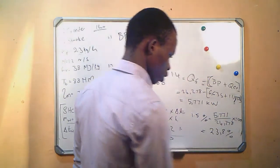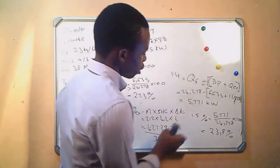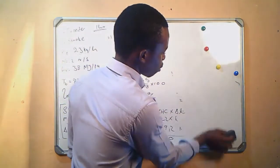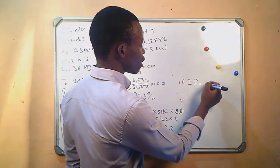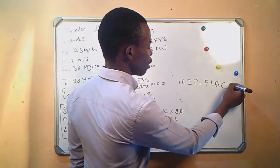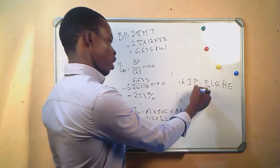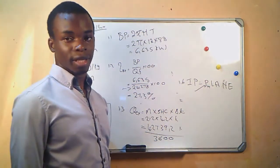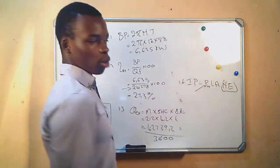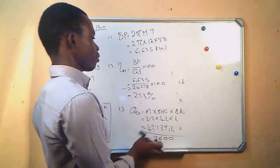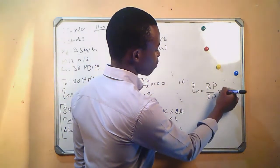Question 1.6: the indicated power. The formula IP = P × L × A × N × E requires mean effective pressure, stroke length, and area — information we are not given. Instead we use mechanical efficiency: mechanical efficiency = (brake power / indicated power) × 100.